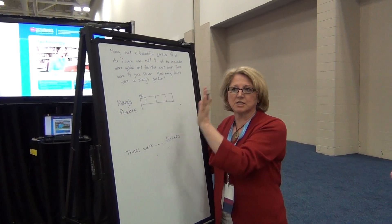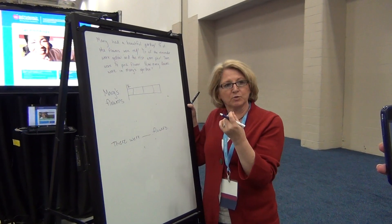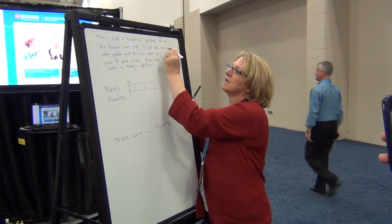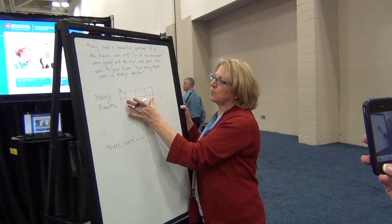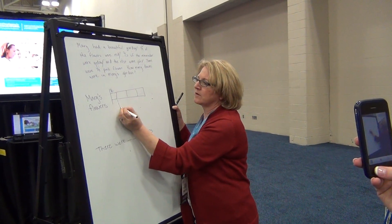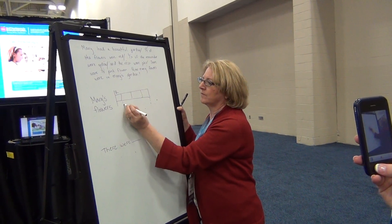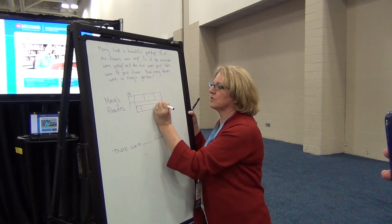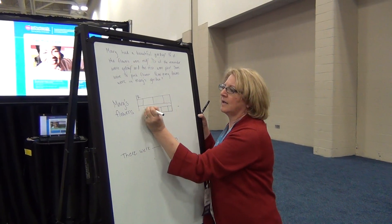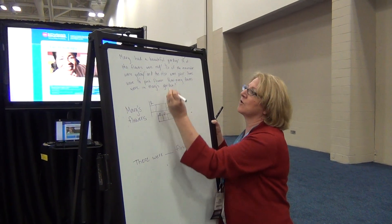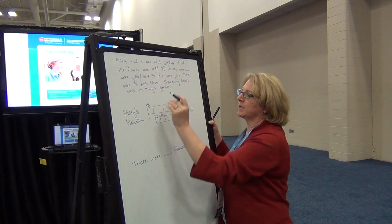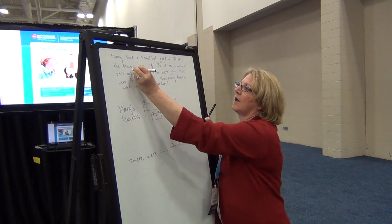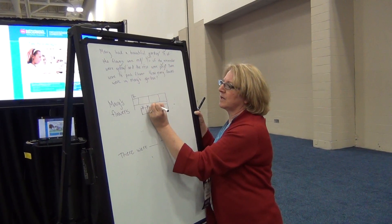It helps your fast kids slow down and make sure they get everything. It helps your kids who are struggling go just one piece at a time. 'Two-fifths of the remainder are yellow.' Right there's the remainder, but I'm going to draw this into a new bar. And I have to divide that remainder into two-fifths. And the rest are pink — so these guys right here are pink.